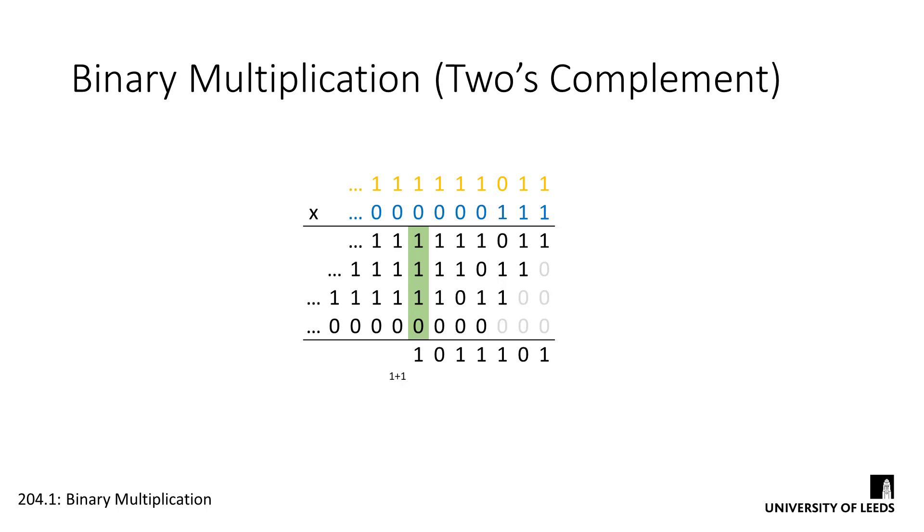So again, carry the 1 into the column on the left, which has already got a 1 in it, so we add the 1 and 1 together to make 1, 0. And carry on, just sort of rippling the carries through the columns on the left.